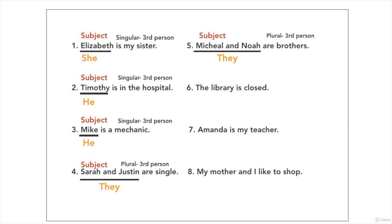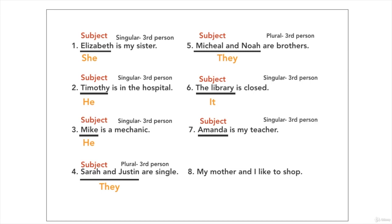Number six: The library is closed. The library is the subject. It is singular, it is a place, third person — it. Number seven: Amanda is my teacher. Amanda is the subject. It is singular, a woman, third person — she.